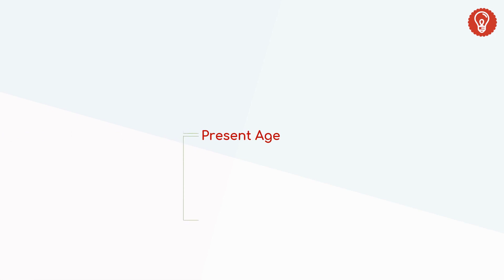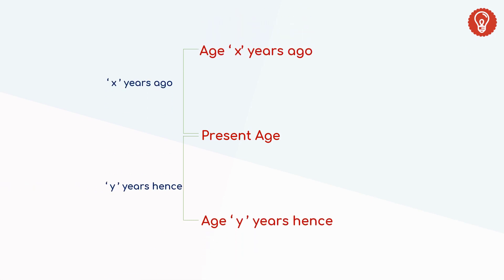Before we get into the next one, let me prep you a little. So far, we have seen questions where after 3 years or after 6 years is given. Sometimes the question has both — for example, 10 years ago and 15 years hence will be given. If both going forward and going backward is given in the question, it should always be calculated from the present age.